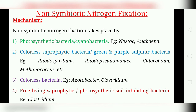Colorless bacteria like Azotobacter can fix atmospheric nitrogen in the dark with the help of ATP energy, using reducing power obtained from respiration. Free-living saprophytic or photosynthetic soil-inhabiting bacteria or cyanobacteria are either anaerobic, facultative, or aerobic. Anaerobic conditions are desirable because the enzyme nitrogenase is highly susceptible to permanent damage by oxygen. In Clostridium, the nitrogenase enzyme is shielded by a protective covering.